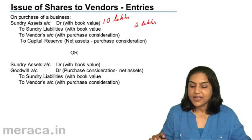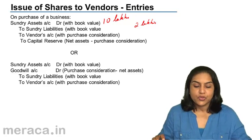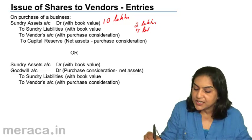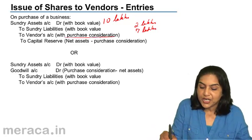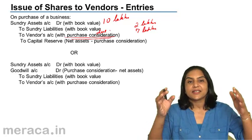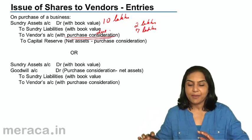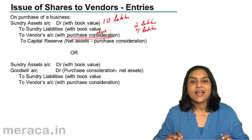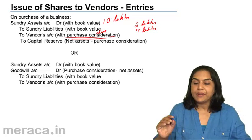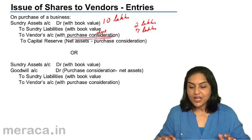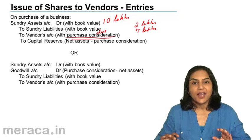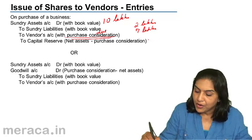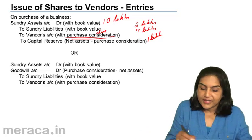So the net worth is 10 minus 2, which is 8 lakhs. But suppose the vendor is being paid only 7 lakhs — the purchase consideration due is only 7 lakhs. We have negotiated with the vendor; the company takes over the assets and liabilities and pays him 7 lakhs. The company records assets at 10 lakhs and liabilities at 2 lakhs, so the net worth being taken over appears to be 8 lakhs. But the vendor is being paid only 7 lakhs; therefore the company makes a profit of 1 lakh, which is credited to capital reserve.